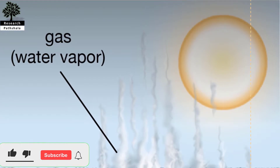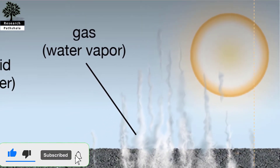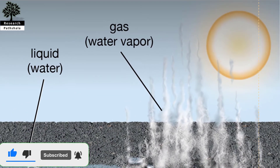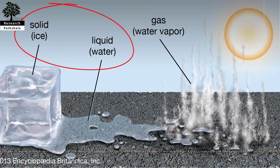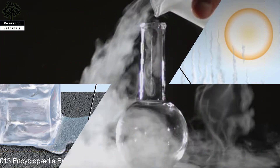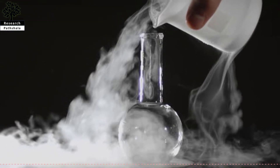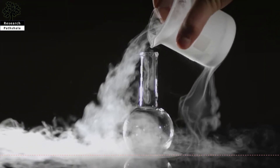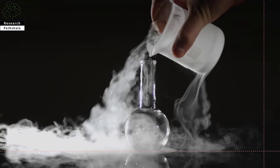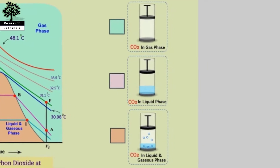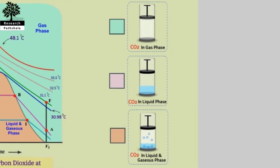A mixture of liquid and gaseous water is a pure substance, but a mixture of liquid and gaseous air is not. A mixture of liquid water and ice is a pure substance since both phases have the same chemical composition. A liquid mixture of air and gaseous air is not a pure substance because the composition of the liquid and the mixture is no longer chemically homogeneous. This is due to the various compounds in the air condensing at different temperatures at a specific pressure.